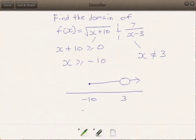We should put a hole here at 3 to represent our exclusion. Therefore, our domain is actually from negative 10, including the value negative 10, to 3, excluding the value of 3, and from 3 and onwards.